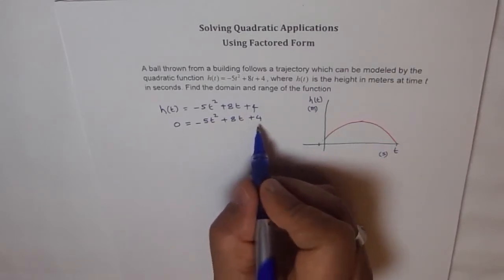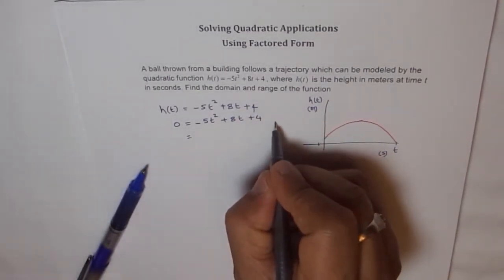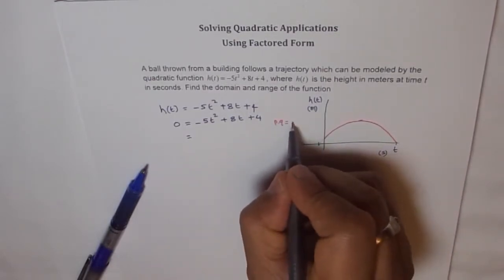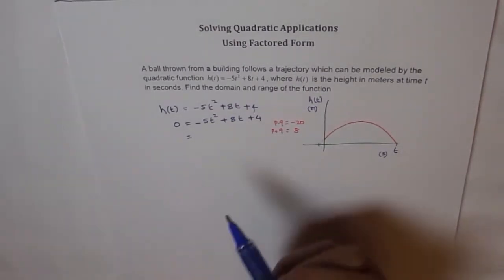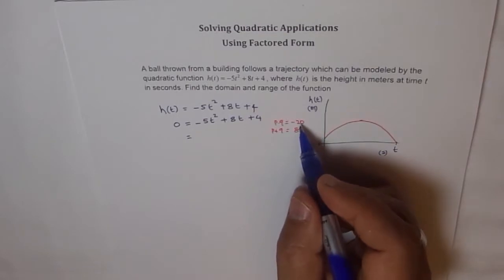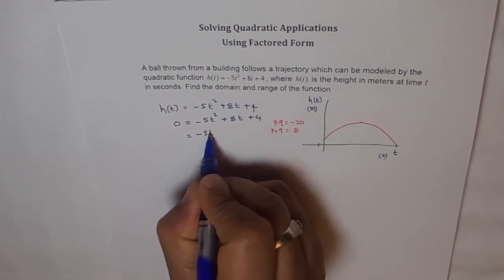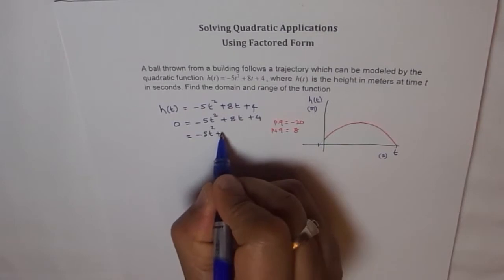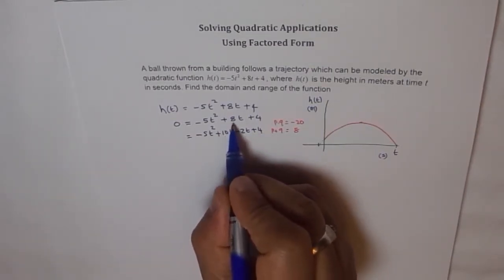You need to have product of 5 times 4, which is minus 20. We are looking for two numbers, p and q, whose product should be minus 20 and p plus q to be 8. The two numbers should be of opposite sign and the bigger number should be positive. The two numbers are 10 and 2 - 10 plus and 2 negative. So we can split the middle term with 10 and 2. This is equal to minus 5t squared plus 10t minus 2t plus 4. 10t minus 2t is 8t.